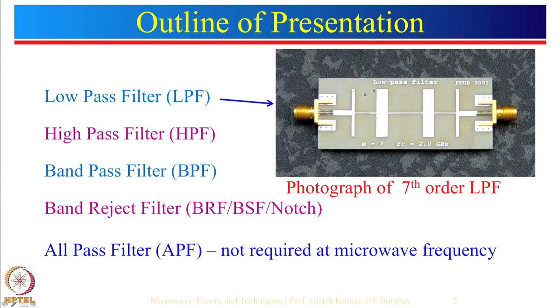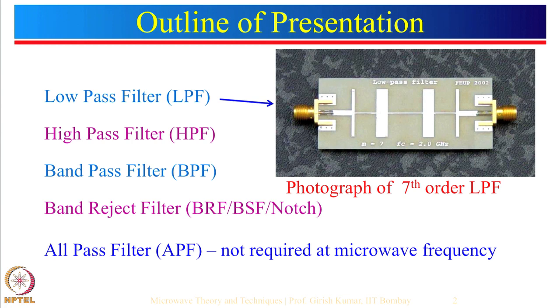Here is a photograph of a 7th order low pass filter. You can see there is no inductor and no capacitor. Inductors and capacitors are realized using the transmission line concept. Recall that a small transmission line that is shorted behaves like an inductor, and a small transmission line with an open circuit behaves as a capacitor. The same concept is used to realize a low pass filter using transmission lines.